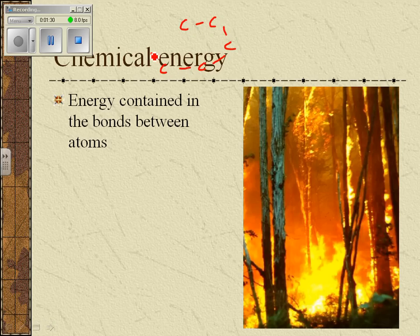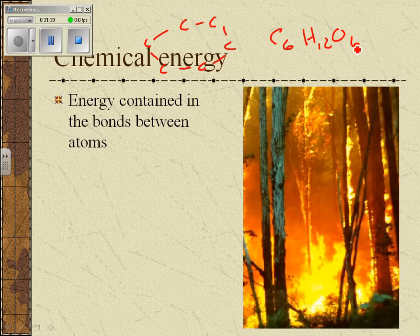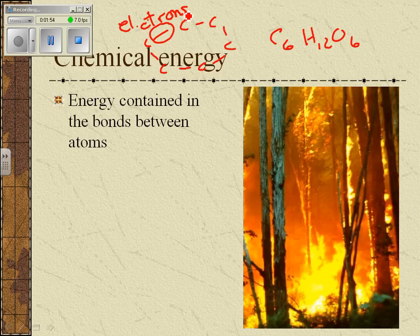We're specifically going to talk about a chemical called glucose today. Glucose is a molecule with a ring structure — I'm just showing the carbon atoms. Glucose's chemical formula is C6H12O6. I've only shown some of the chemical bonds. When we draw a molecular structure like this, we show the bonds as lines. What they really are is covalently shared electrons. So if we break those bonds and break apart the molecule, energy is released.